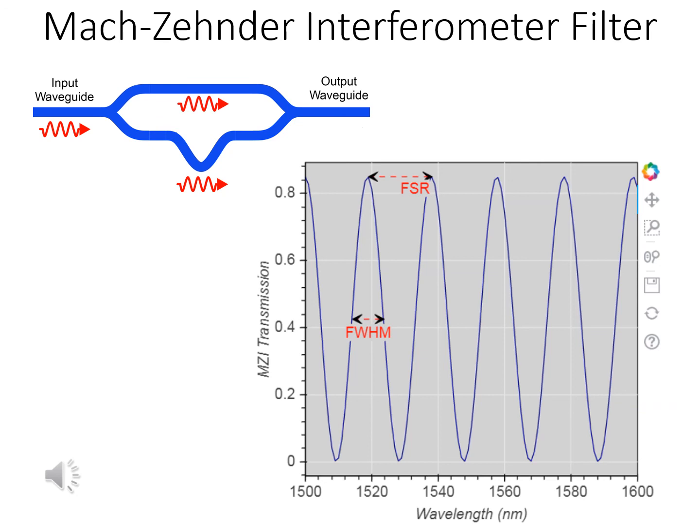With the interactive chart that follows this video, you will explore how changing the arm lengths affects the separation of the transmission peaks, called the free spectral range, as well as the width of the peaks.